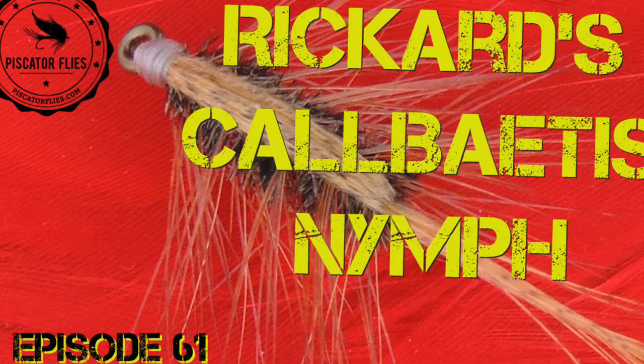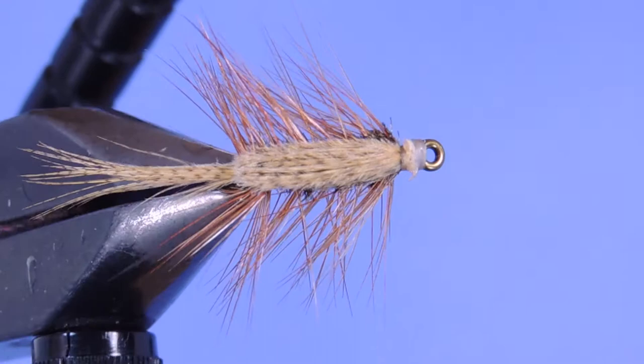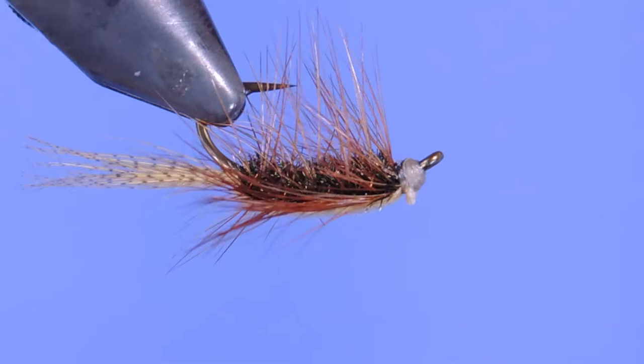Hey tiers, Darren here. Welcome back to another fly tying tutorial. Today we're going to be tackling Denny Rickards Calibatus Nymph in a peacock version. There's also tan, olive, black, or a rusty orange version that could be tied.